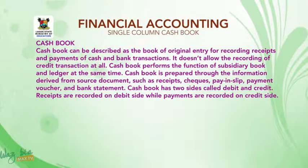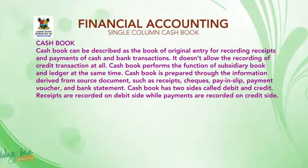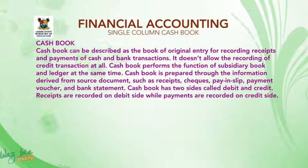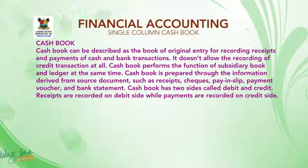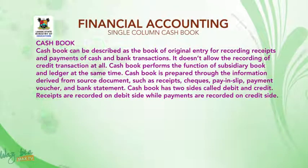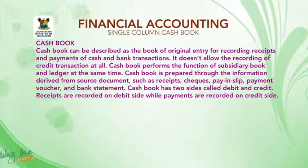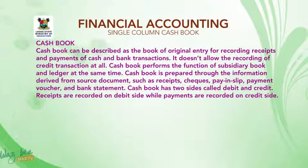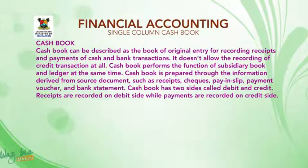Cashbook can be described as the book of original entry for recording receipts and payments of cash and bank transactions. It does not allow the recording of credit transactions at all. Cashbook performs the function of subsidiary book and ledger at the same time. Cashbook is prepared through the information derived from source documents such as receipts, checks, pay-in slip, payment voucher, and bank statement.